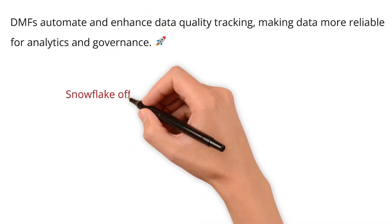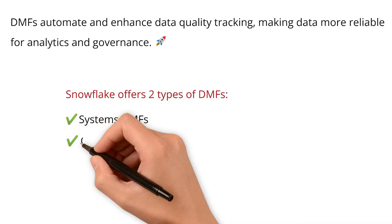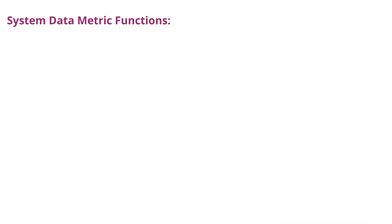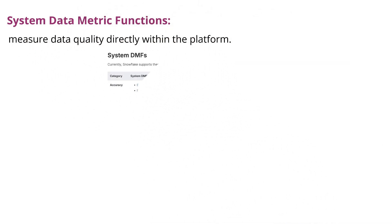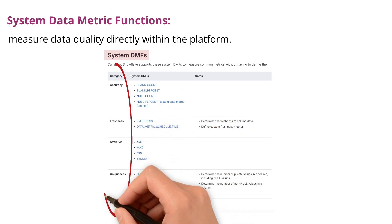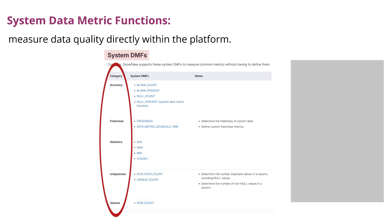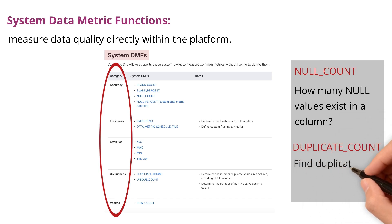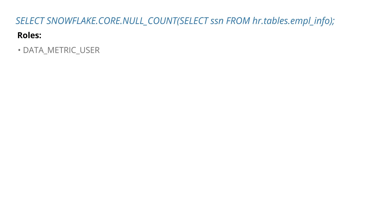Snowflake offers two types of DMFs: system DMFs and custom DMFs. System data metric functions help measure data quality directly within the platform. These functions are available in the core schema of the shared Snowflake database and cannot be modified. With DMFs, you can track key data quality attributes like accuracy, freshness, uniqueness, and volume. For example, you can use null count to check how many null values exist in a column, or duplicate count to find duplicate records. These functions can be accessed using simple SQL queries such as SELECT snowflake.core.null_count. With the appropriate roles, these functions can be used to assess data quality directly within the platform.